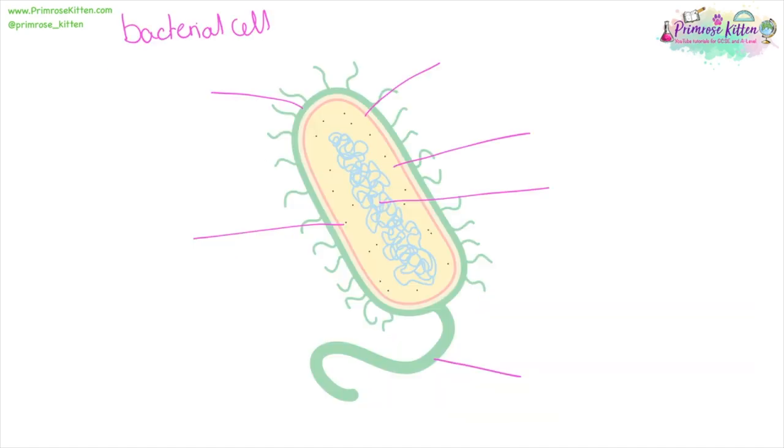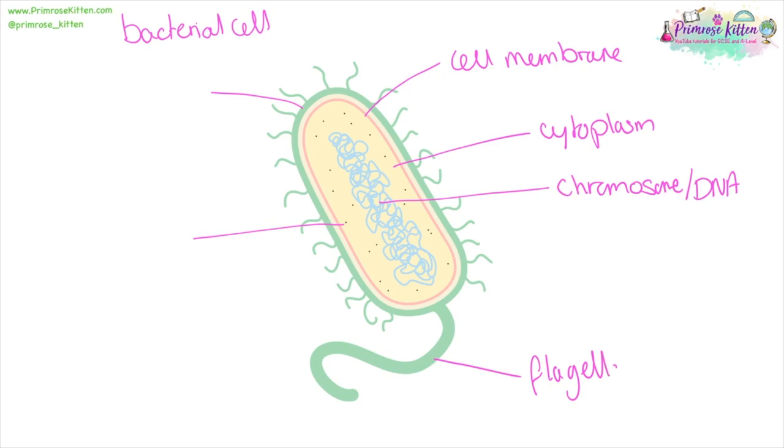Here we have our bacterial cell, which has its cell membrane controlling what goes in and out, the cytoplasm where most of the reactions take place, the chromosome - the DNA not in a nucleus, the flagella which is used for locomotion, and then ribosomes for protein synthesis. And then on the outside, you have the cell wall.